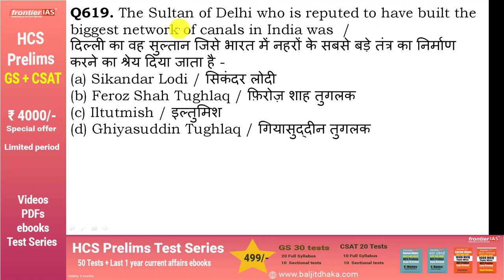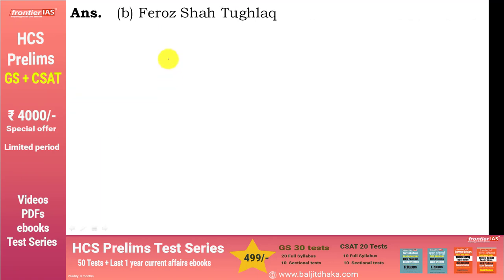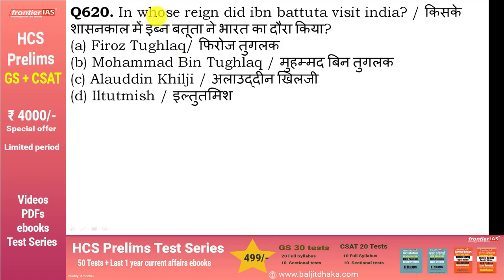Which Sultan of Delhi is reputed to have built the biggest network of canals in India? दिल्ली का वह सुल्तान जिसे भारत में नहरों के सबसे बड़े तंत्र का निर्माण करने का श्रेय दिया जाता है, वो है option B, Firoz Shah Tughlaq।